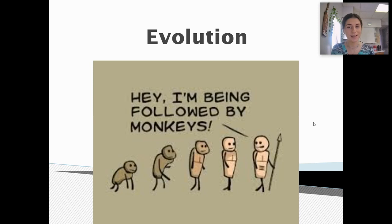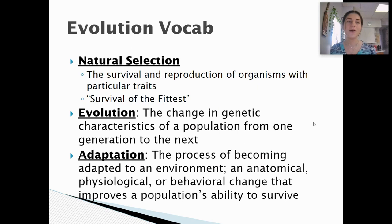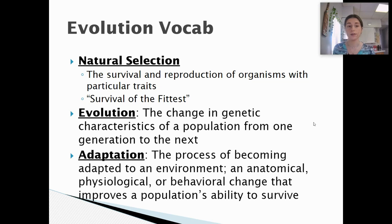So we have some evolution vocabulary. Our first term is natural selection, and this is the survival and reproduction of organisms with particular traits. Usually the organisms who have traits that help them survive in a particular environment will be able to reproduce and have those traits passed on to the next generation.